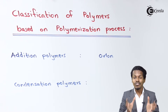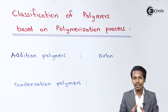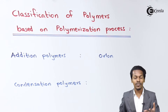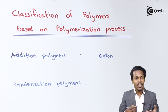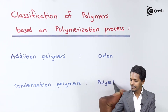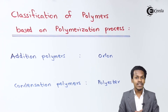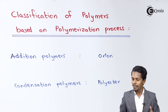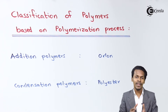Such kinds of polymers which are formed due to condensation reactions are basically known as condensation polymers. For example, polyester or nylon 6-6 are certain polymers which are nothing but condensation polymers.